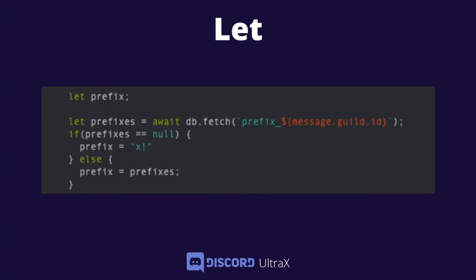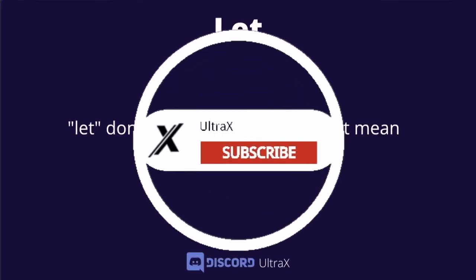Then I defined prefixes as db.fetch('prefix'), meaning it was searching the database — the database is where I store my data. So if there is data it will be that value. Then if prefixes equals null, meaning there's no data, I set prefix equal to '!'. I defined it again in an else-if as prefix equals prefixes. So as you can see, I used prefix twice in different cases.